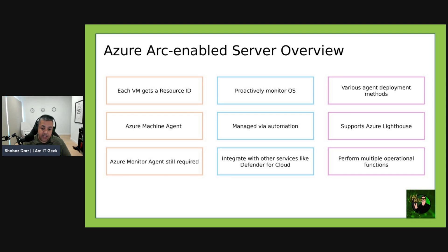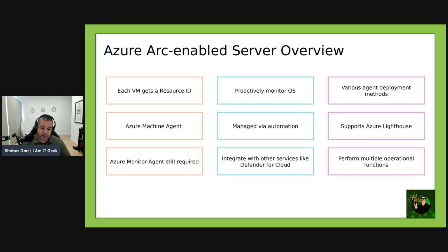You can install the connected machine agent manually or deploy to multiple machines at scale using different deployment methods — we'll talk about those shortly depending on what scenario works for you. This service also supports Azure Lighthouse, which lets service providers sign into their own tenants and manage subscriptions and resource groups for customers that they have delegated.